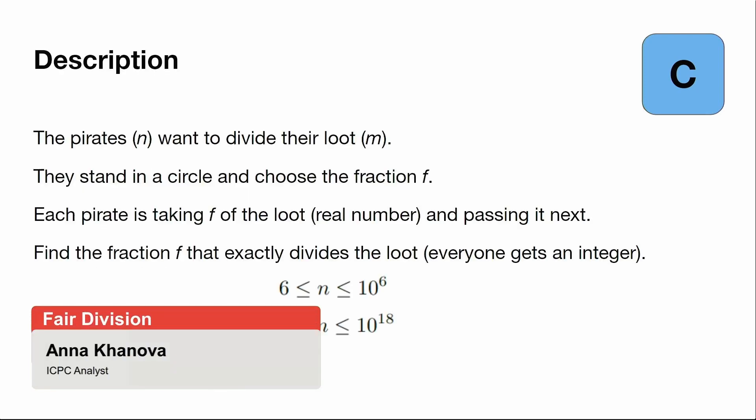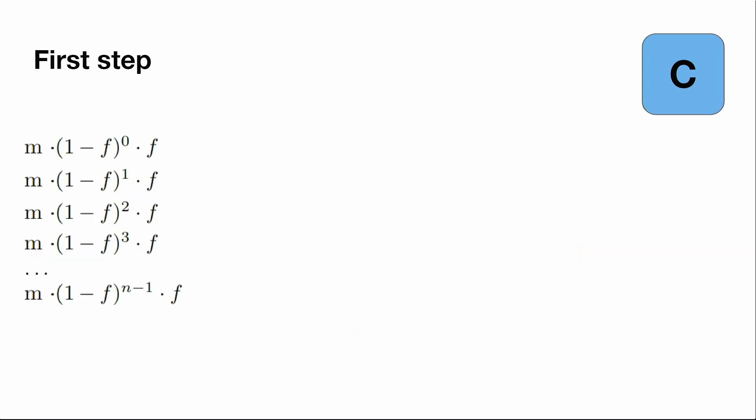Problem C, Pair Division. There is a crew of n pirates, from 6 to 1 million, and they want to divide the loot, which can be very big. They stand in a circle and choose the fraction f. Each pirate is taking f of the loot, a real number, and passing it next. We have to find the fraction f that exactly divides the loot so in the end everyone will get an integer.